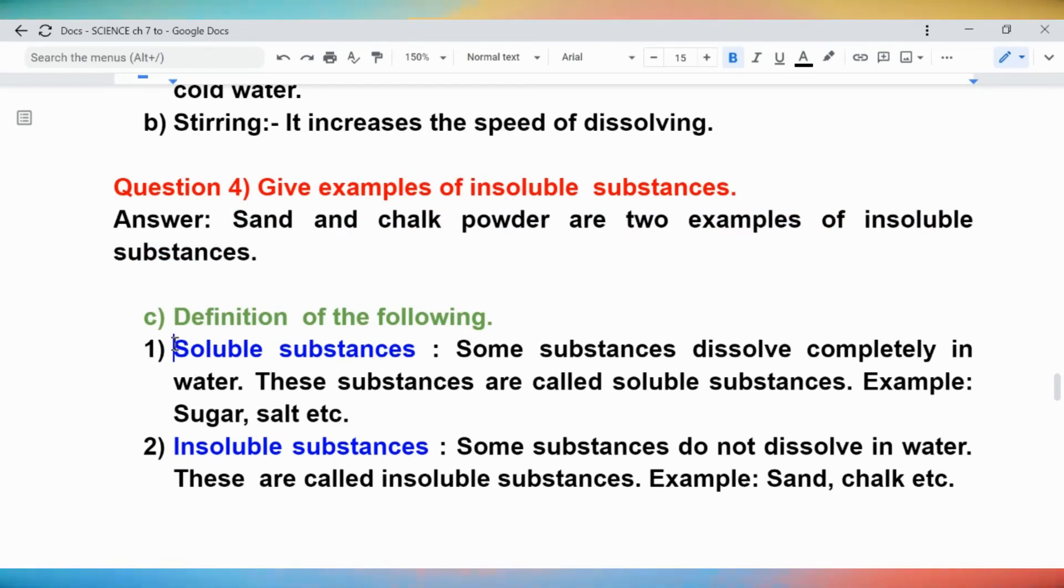C. Definition of the following. 1. Soluble substances: Some substances dissolve completely in water. These substances are called soluble substances. Example: Sugar, salt, etc.